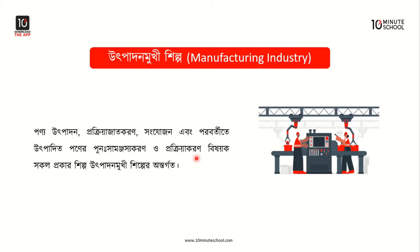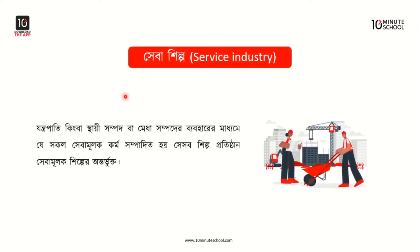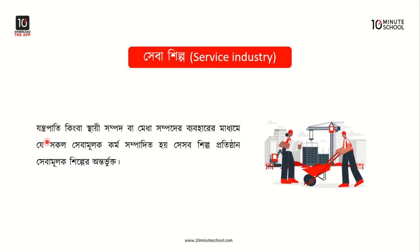Examples of production-oriented industries include textile industry, sugar industry, and jute industry. In these industries, raw materials like silk, jute, and other inputs are used and fully converted into finished products. This is the core definition of production-oriented (Utpadan Mukhi) industry.